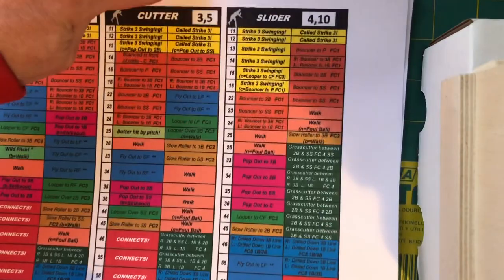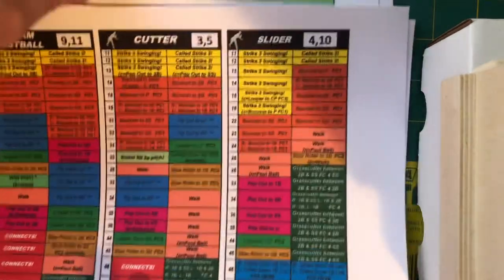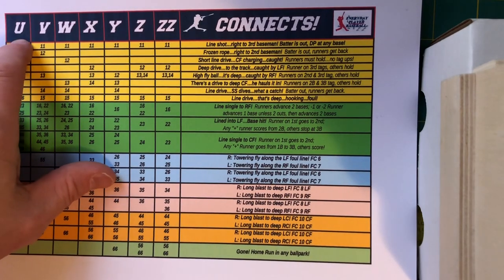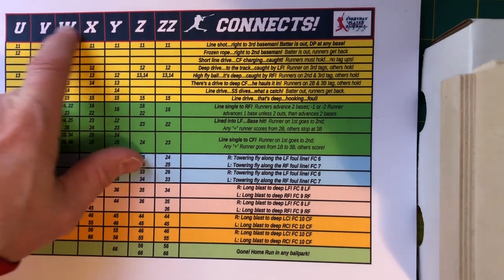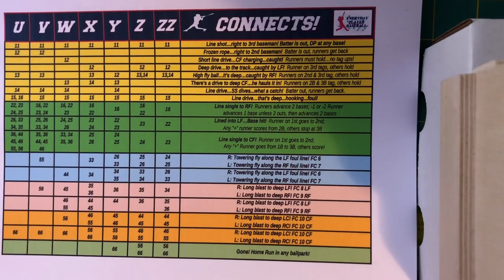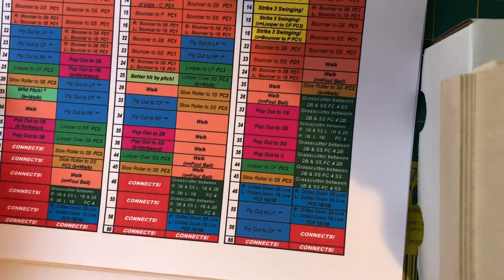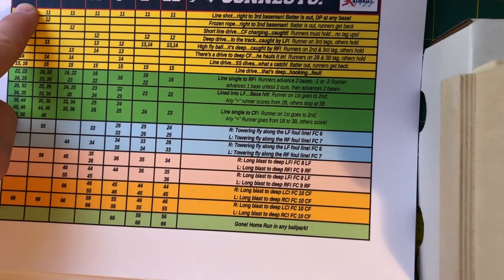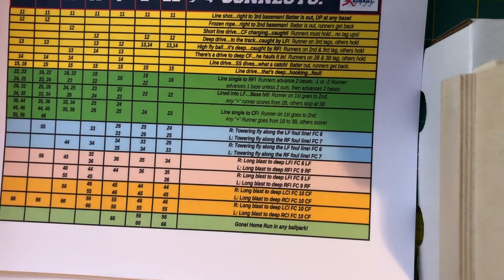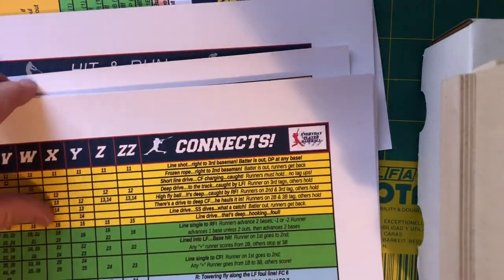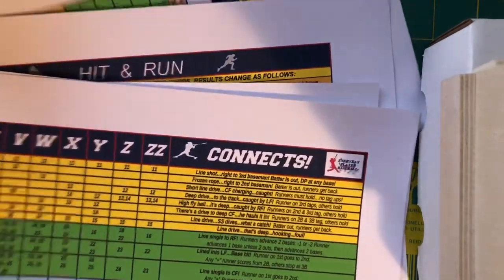Suppose that we're on the cutter, in the left column, and we get a 'connects' result. There is a connects chart. Every player is rated for their power ability — U is the weakest, double-Z is the most impressive power, so weakest to strongest. If a connects result is gotten from a pitch, we re-roll, find the hitter's letter power rating, and look down the column. The power doesn't get adjusted, but the hitting rating can be. Then you get the strategy cards.